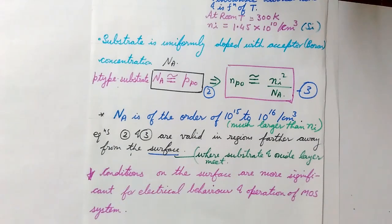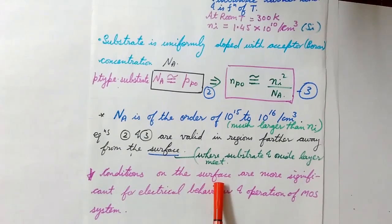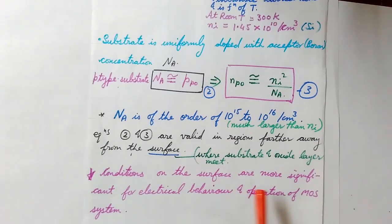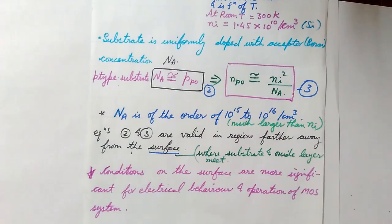When we talk about the electrical conductivity or electrical properties, the conditions on the surface—that is the point where the substrate and the oxide layer meet—are more significant for electrical behavior and operation of the MOS system. For this we need to understand about the energy band diagram, and then we will see how it changes when all these three layers (the substrate, the oxide, and the gate) are brought in contact to form the MOS structure.